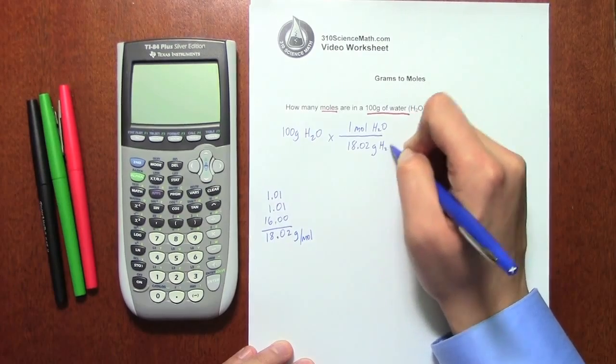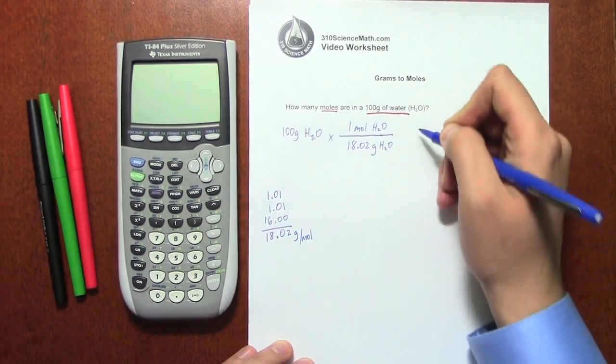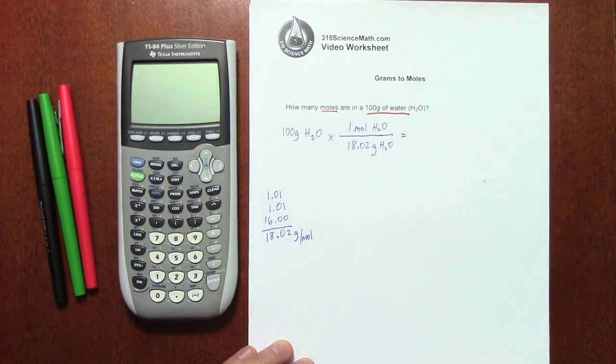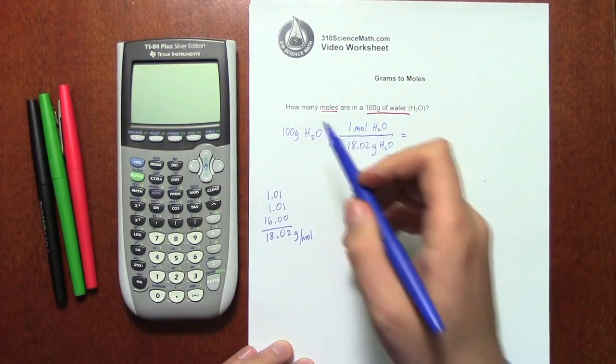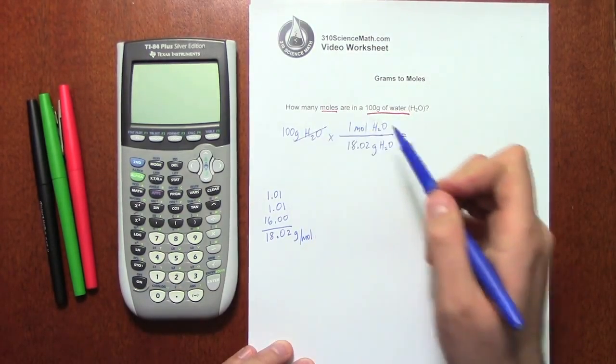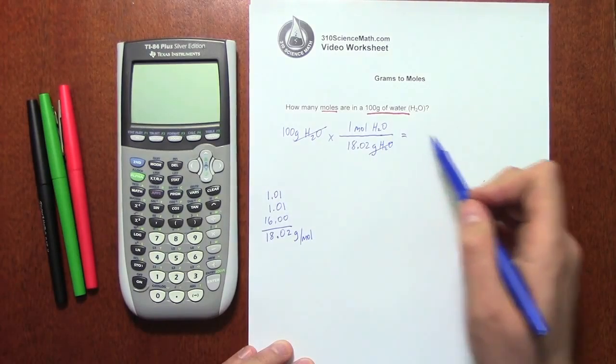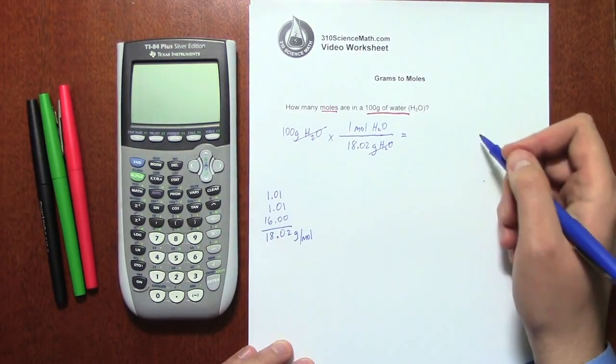So now I've got 18.02 grams for every one mole of H2O. Of course, this is grams of H2O in the bottom. So as far as the dimensional analysis style goes, this is how you set it up. You want to make sure that the grams of water cancels with grams of water. And at the end of the problem, you're left with moles of H2O.